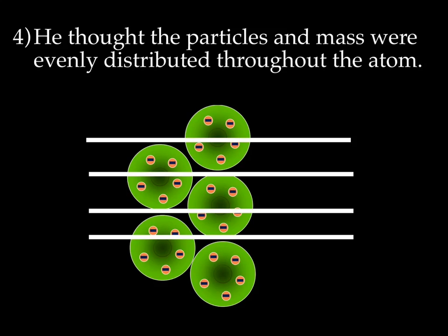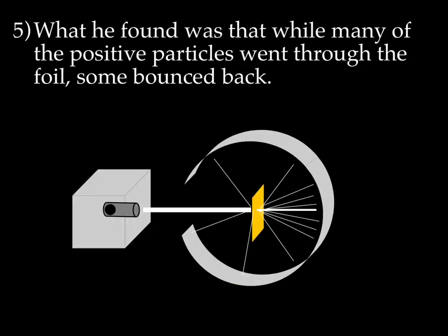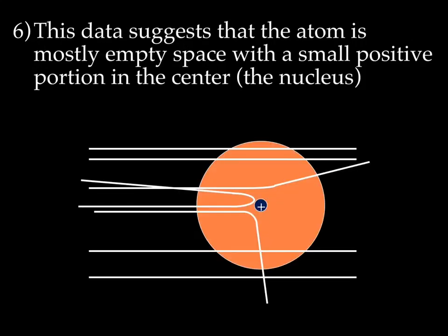He thought the atom looked like just a blob with little negatives everywhere. He thought this positive beam would just shoot right through to the other side. But what really happened is as the positive particles were going through, most of them went through, but some of them were bounced off. Can you see them bouncing, being deflected at a funky angle? He thought, what the heck? Why would that happen? What would deflect or make a positive charge bounce back? It would have to be a positive portion at the center of the atom.